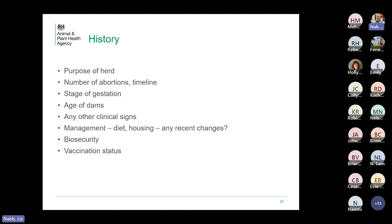Consider the age of dams — is this in first-calving heifers, naive cows? Or is there no age pattern whatsoever, suggesting a new infectious agent to which the whole herd is naive? Are there any other clinical signs — Salmonella is a good example where we often see scour and sickness in cows as well. Has there been any change in management or diet? Access to poorly conserved forage, a new delivery of mouldy straw? Have young dogs been introduced with access to calving pens? And biosecurity — do wild animals and birds have access to the TMR? And vaccination status, given that BVD, IBR, and Salmonella are preventable.